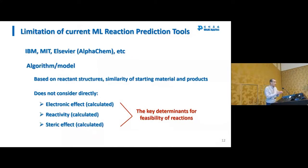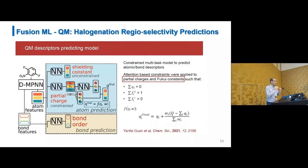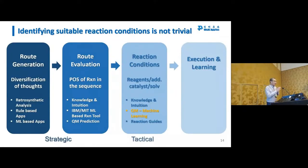The current machine learning reaction prediction tools have limitations because of the algorithms and models being used. As organic chemists know, the key determinants for feasibility of a reaction are electronic effects, reactivity, and steric effects — and machine learning tools currently do not take these into account. But this is changing. There is a publication from MIT describing what they call a fusion of machine learning and quantum mechanics for regioselective prediction of elongation, incorporating partial charges and Fukui constants, which has shown significantly increased accuracy.